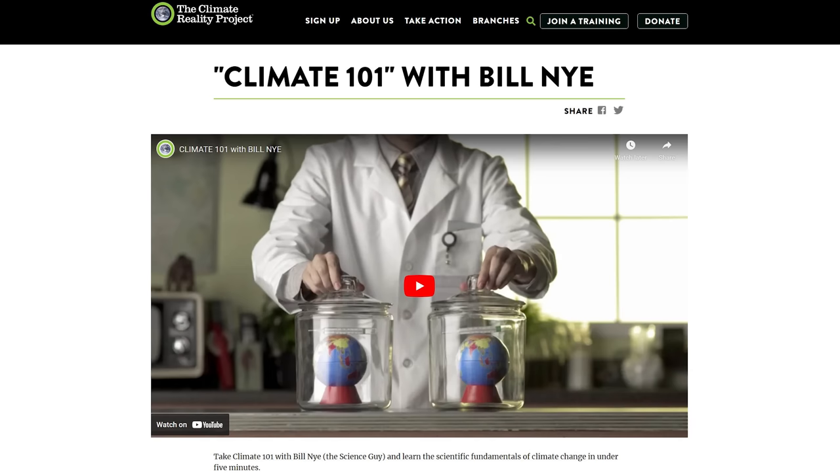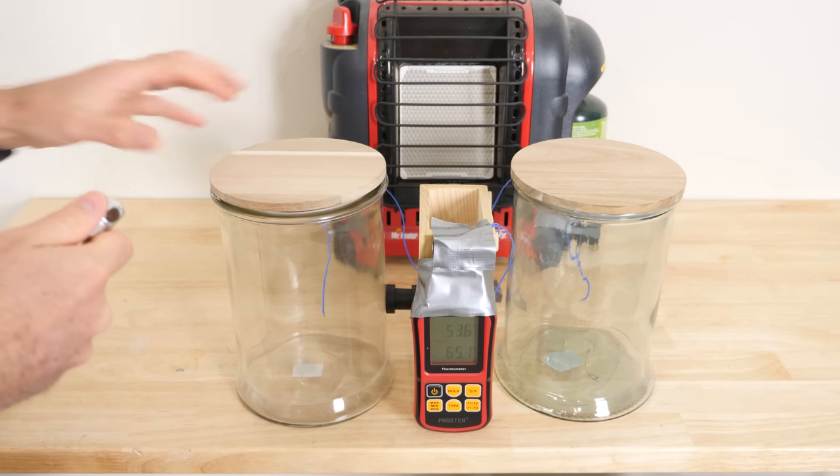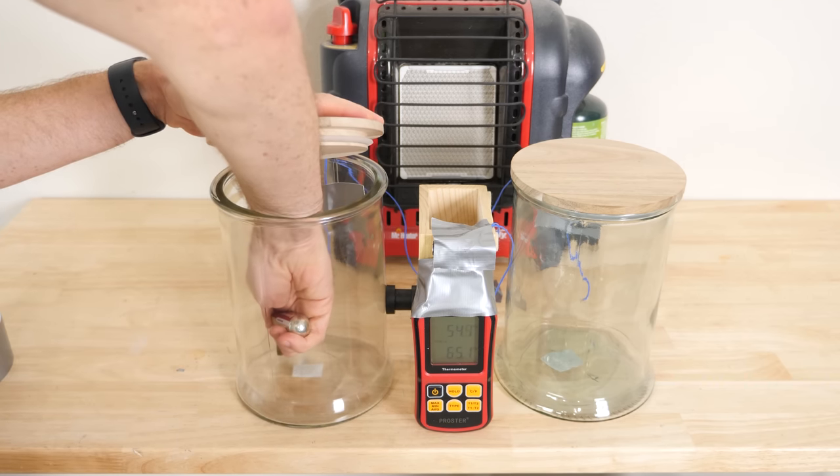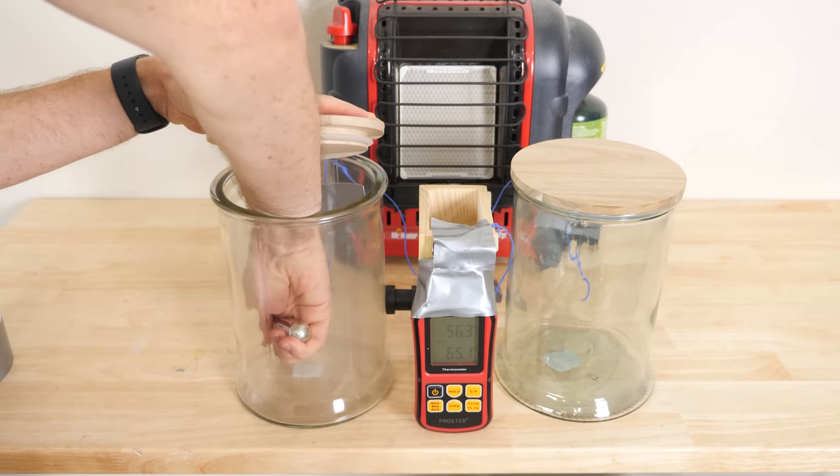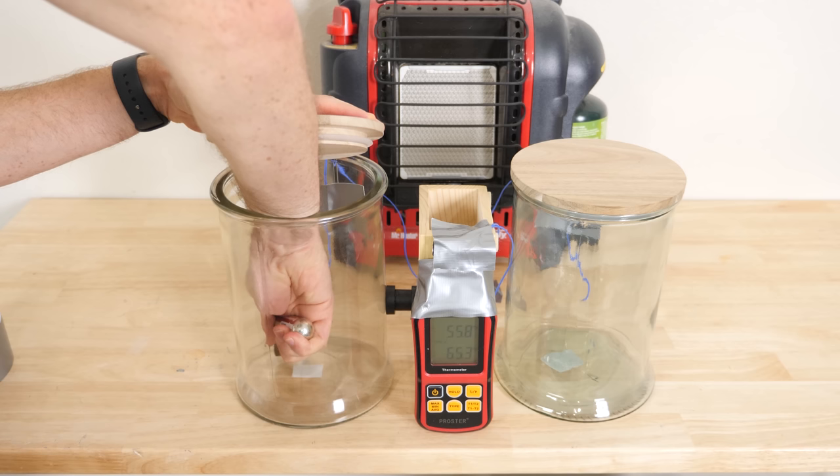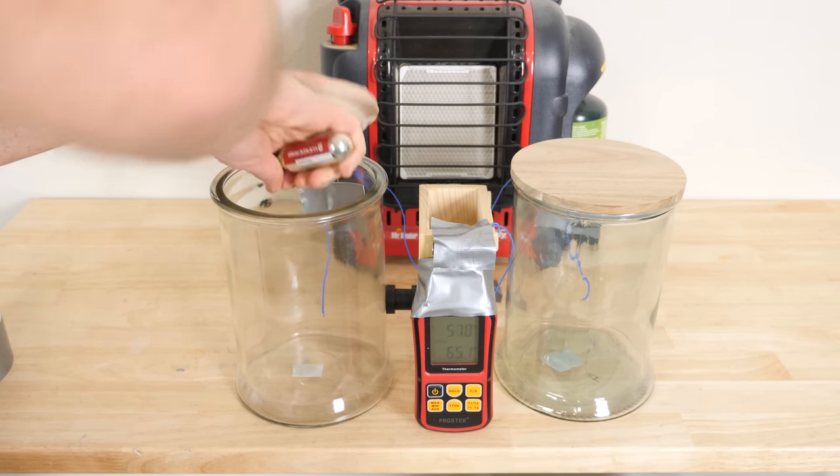Bill Nye famously did a video where he showed how to do a simple experiment to show how CO2 is a greenhouse gas. He said to grab two jars and fill one with air and the other with CO2. Then put a thermometer in both and shine a heat lamp on both. He said within a few minutes you should see that the one with CO2 will rise in temperature faster than the one with air.